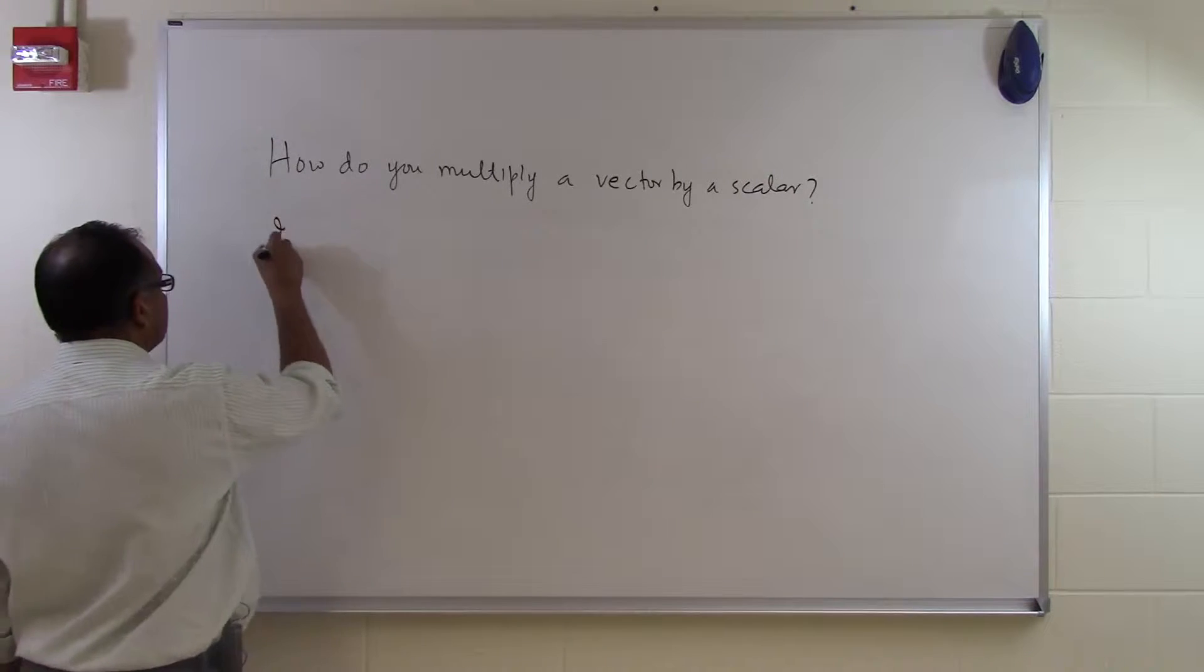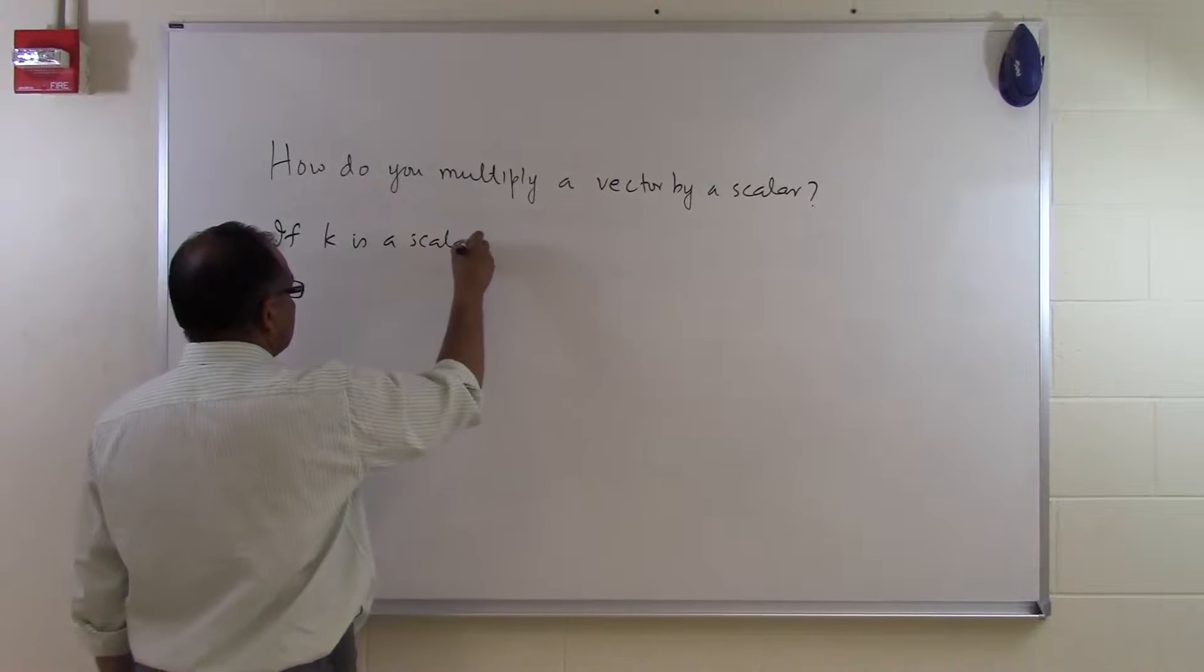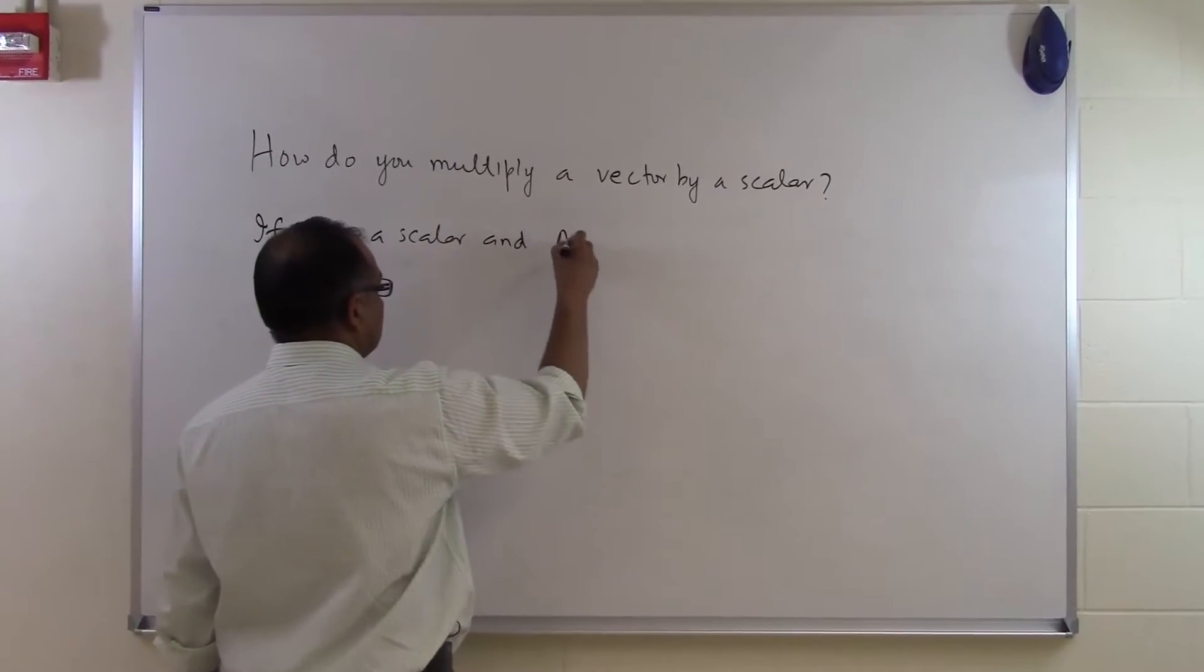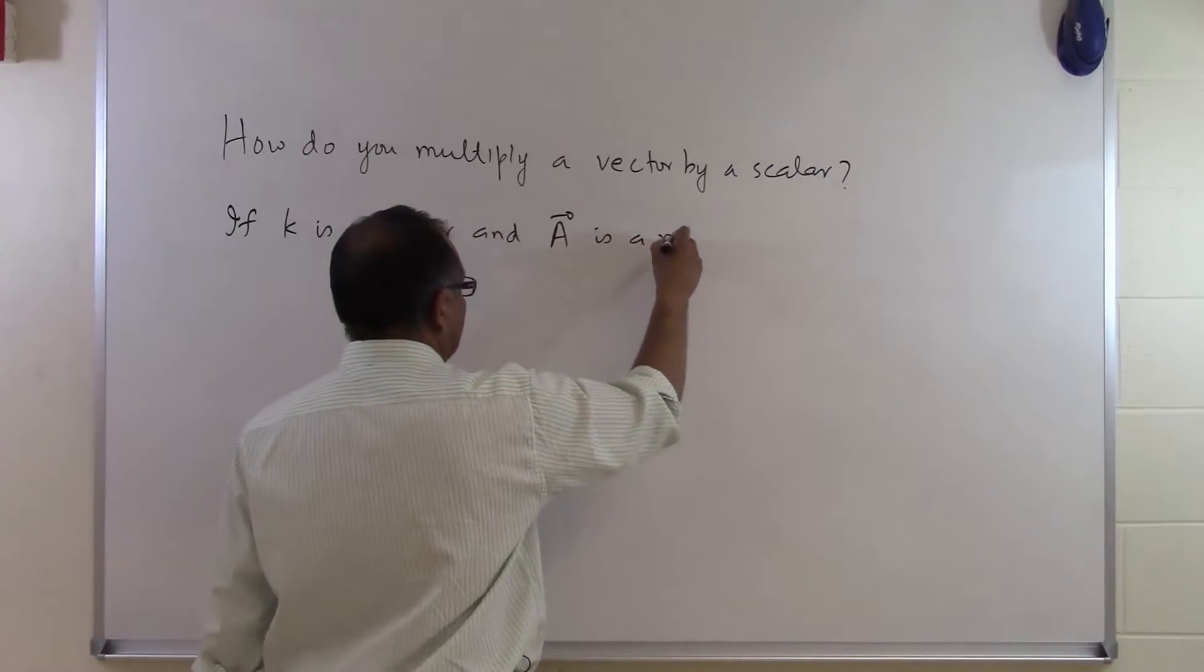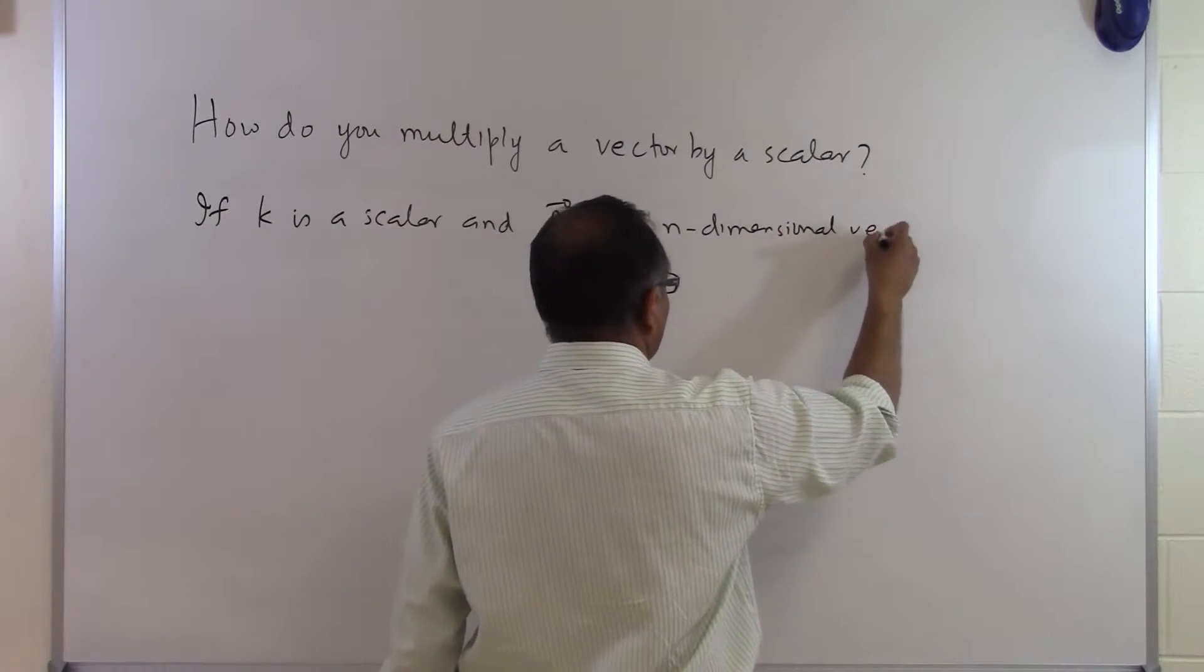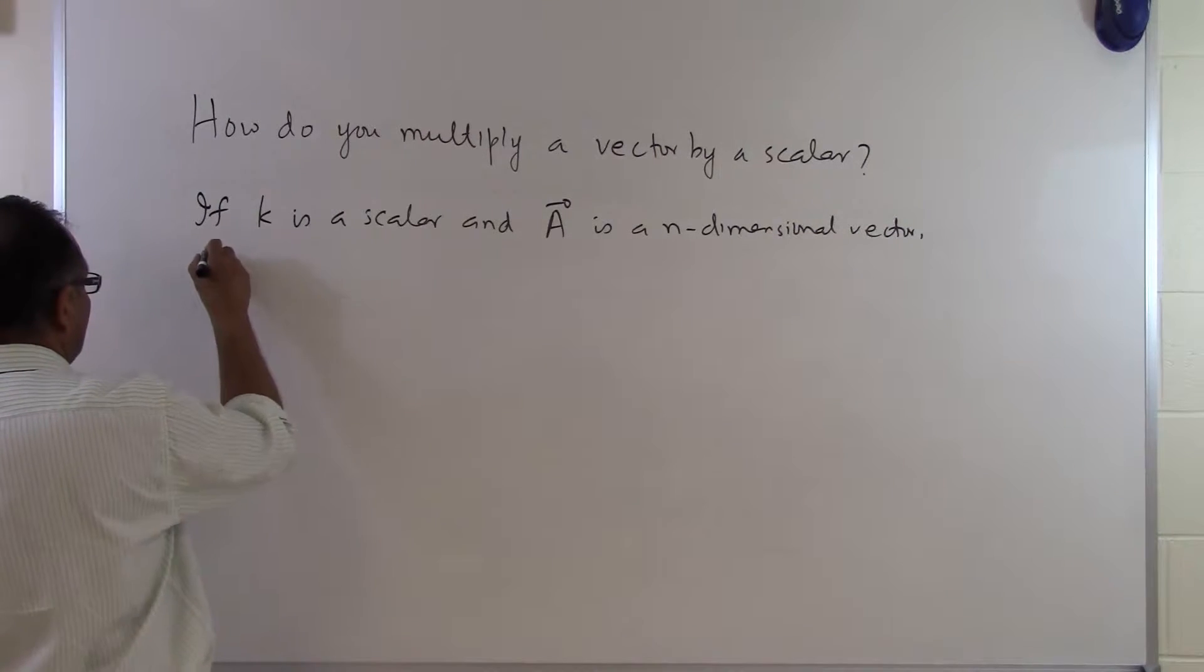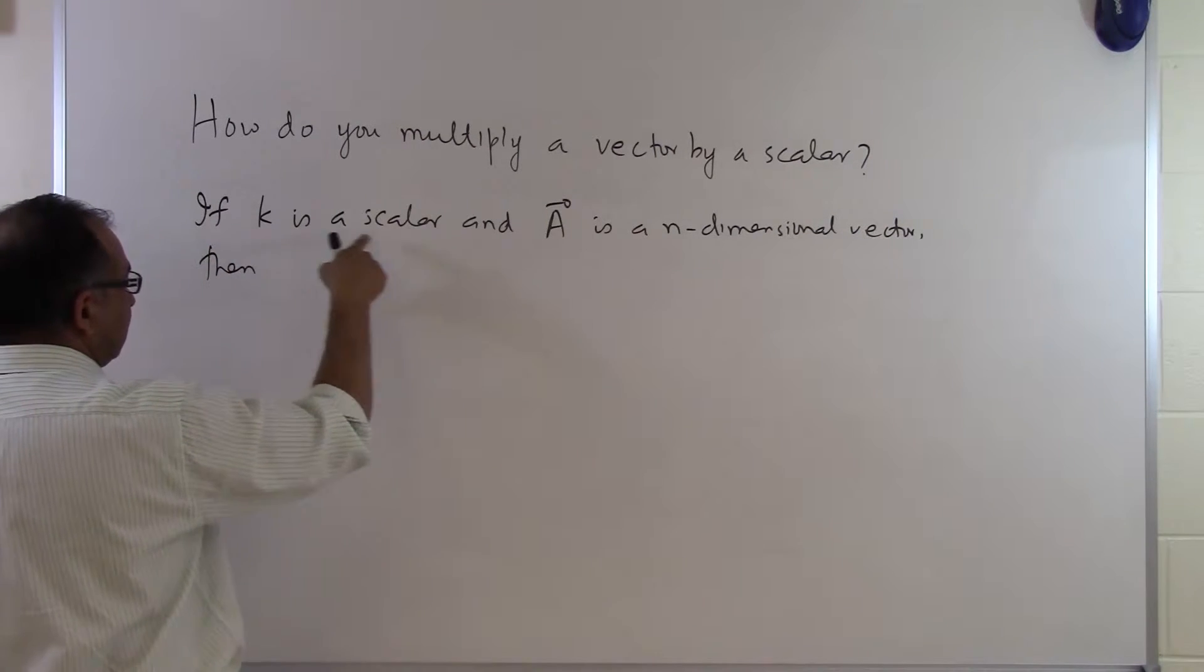If k is a scalar and A is an n-dimensional vector, then if we want to multiply k, which is a scalar, to this vector...